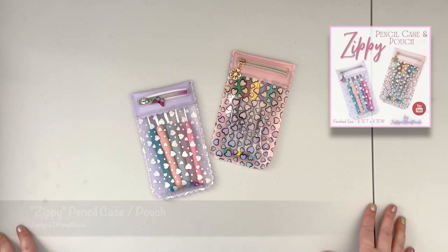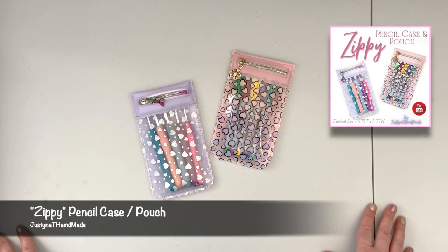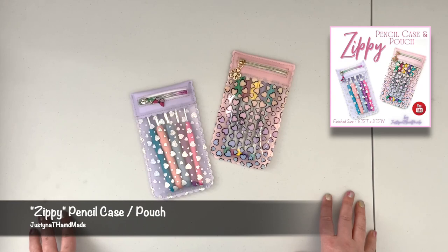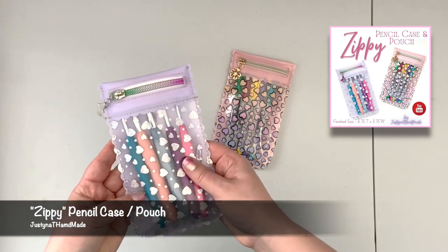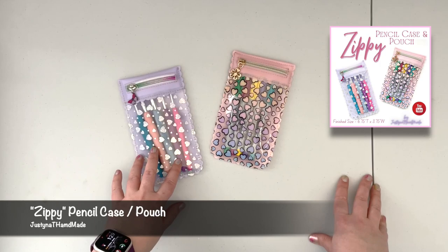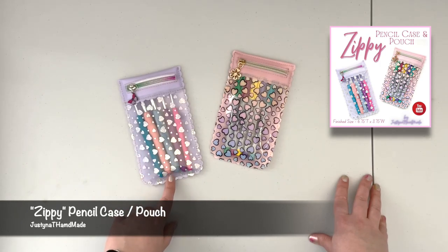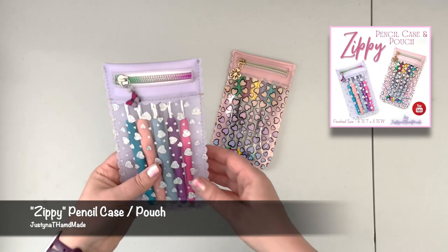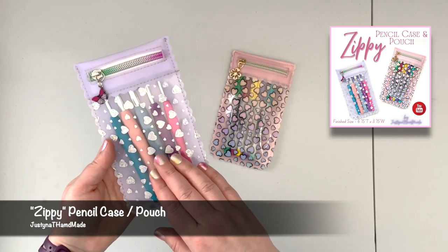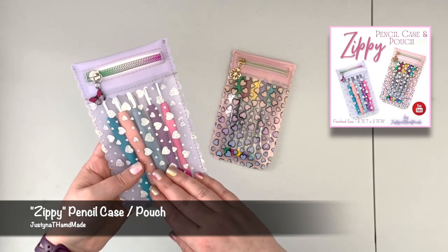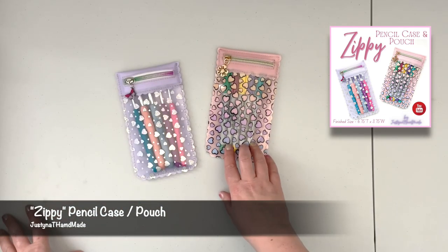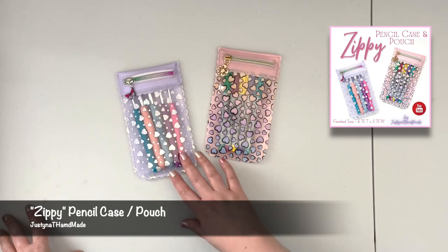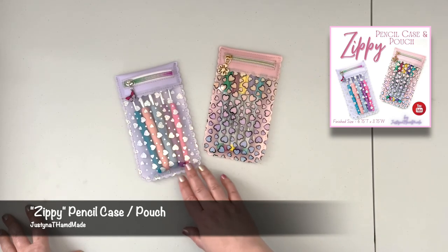Hi everybody, this is Justina with Justina T Handmade. In today's video, I want to share with you another of my ideas for the use of jelly vinyl and clear printed vinyl. This little pattern is great for a pencil case, or as you can see here, I have my crochet hooks organized inside, so it's perfect for your crafter friends, your kids to use as a pencil case, or it's a great gift for teacher appreciation.